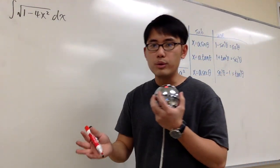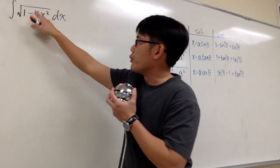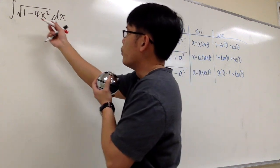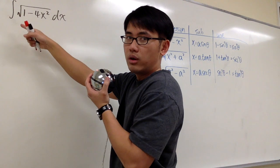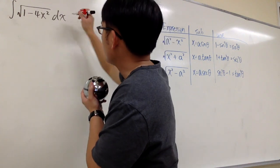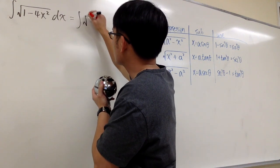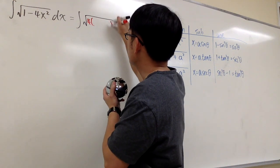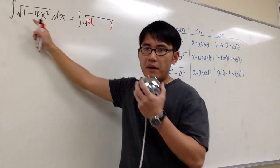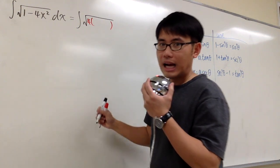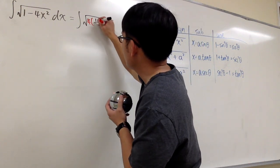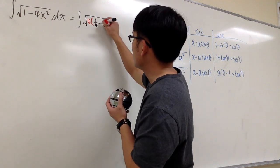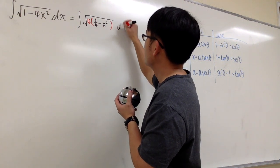You have two choices. One, you can do a substitution — put parentheses and say this is (2x) squared. But what we can do is factor out the 4. So I'm going to say this is the same as the integral of the square root. I'll bring down a 4. Originally I have 1; if I factor out a 4, I'll have 1/4 left inside. Originally we have minus 4x squared; the 4 is out now, so we have minus x squared, dx.